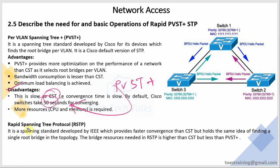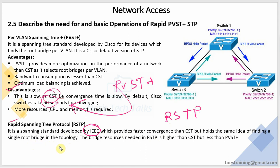Another spanning tree protocol is Rapid Spanning Tree Protocol (RSTP). It is the spanning tree standard developed by IEEE, meaning any vendor's device can run RSTP. It provides fast convergence compared to CST. RSTP is a common standard and is much faster, but uses the same idea of finding a single root bridge in the topology.